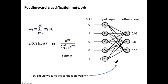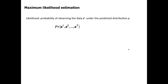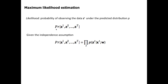The question is how we learn those connection weights such that the prediction probability matches the data. We use maximum likelihood estimation. Likelihood is a metric of how well you are modeling the data — here we are trying to predict the true label. Likelihood is simply the probability of observing the data under the predicted distribution. We want to make sure that the true data is more likely to occur according to our model.